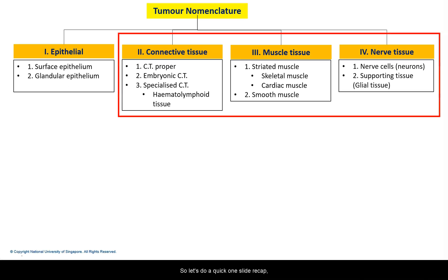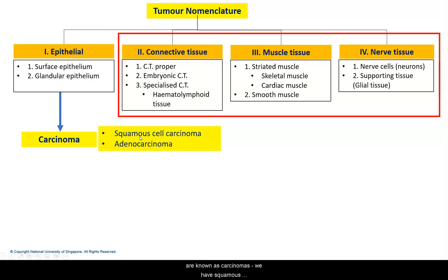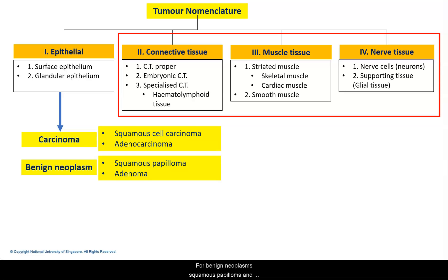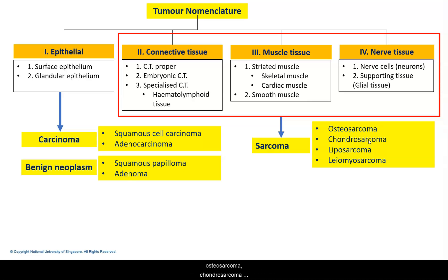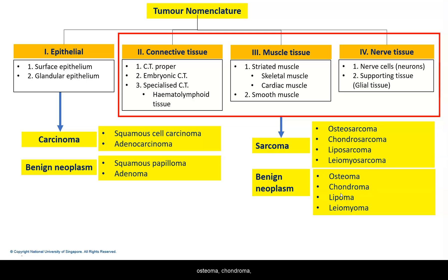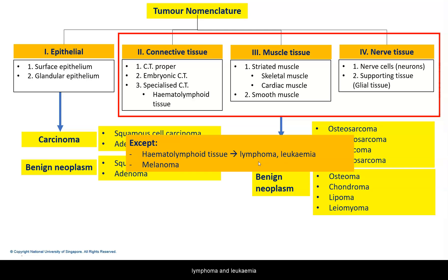Let's do a quick one-slide recap. Malignant tumours of epithelial origin are known as carcinomas: squamous cell carcinoma, urothelial carcinoma, and adenocarcinoma. For benign neoplasms: squamous papilloma and adenoma. Malignant tumours of non-epithelial tissue types are usually known as sarcomas: osteosarcoma, chondrosarcoma, liposarcoma, leiomyosarcoma, and others. For benign neoplasms: osteoma, chondroma, lipoma, and leiomyoma. With a few exceptions — lymphoma and leukemia for hematolymphoid malignancies, and melanoma for malignancies arising from melanocytes.